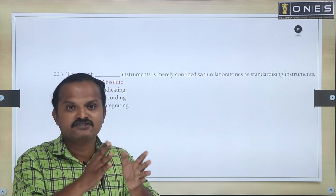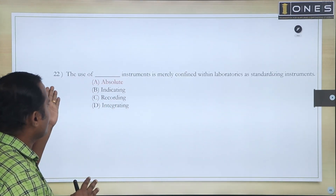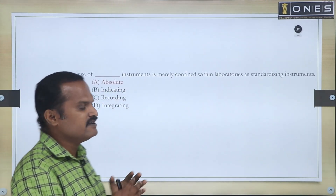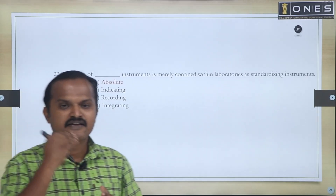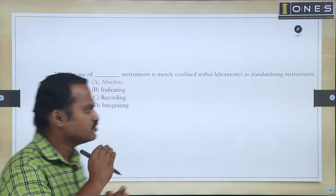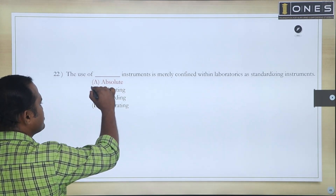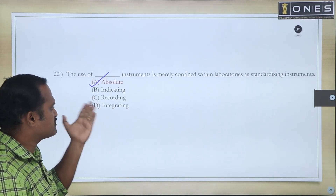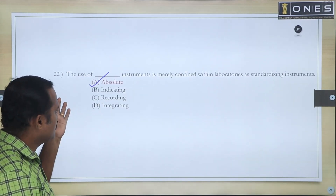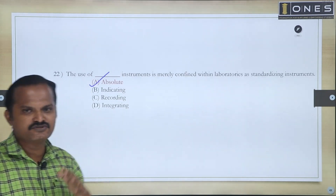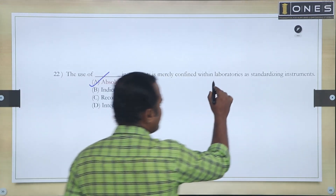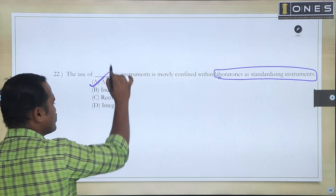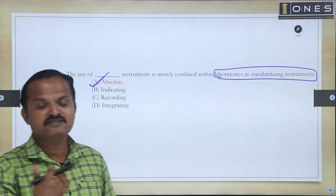For absolute instruments, it is direct measurement. The use of such instruments is merely confined to laboratories for standardization and perfect calibration. So the answer is absolute instrument. In other cases, it is not confined to laboratories — for laboratory purposes in measurement, we use indicating, recording, and integrating instruments. For laboratory and standardizing purposes, we use absolute type equipment. The perfect example is the tangent galvanometer.